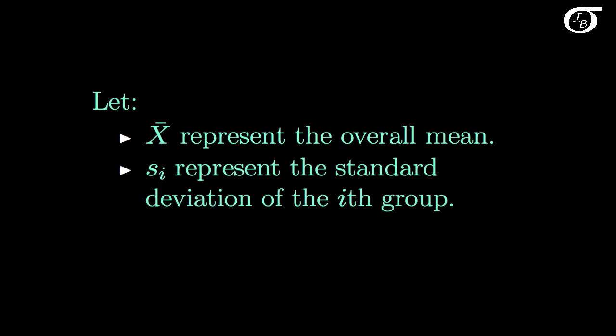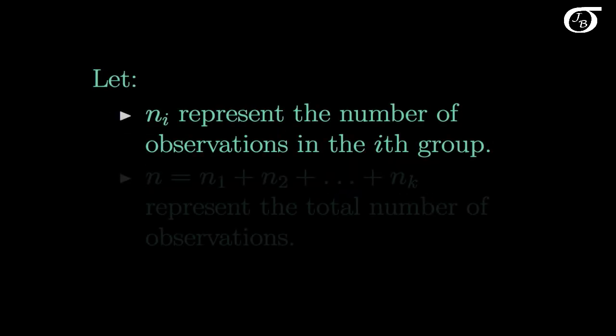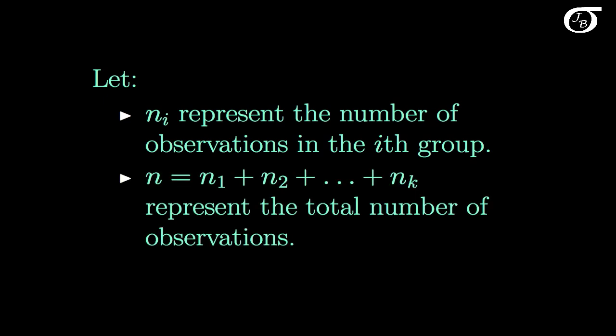S sub i is going to represent the standard deviation of the i-th group. n sub i represents the number of observations in the i-th group. And we're going to let n be the sum of the sample sizes in all of those groups, so we're going to have n observations in total.